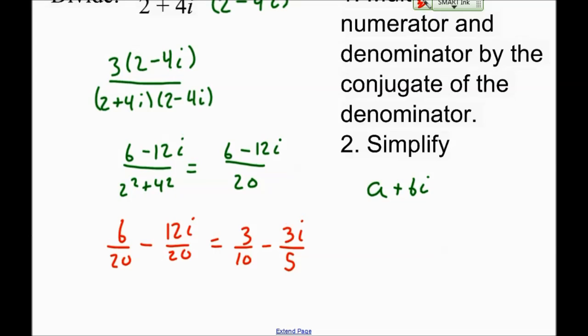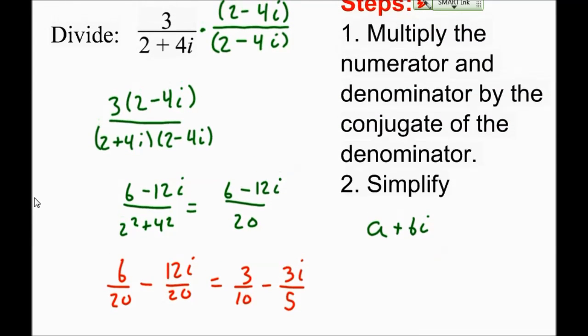That's how you divide complex numbers. You multiply the top and bottom by the complex conjugate of the denominator. Then simplify down to the form a plus bi.